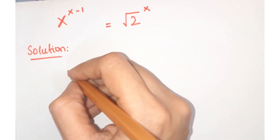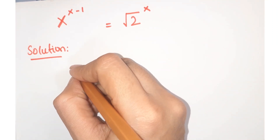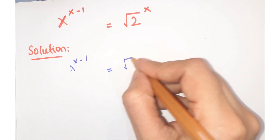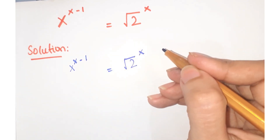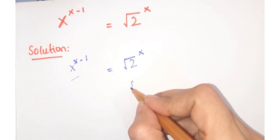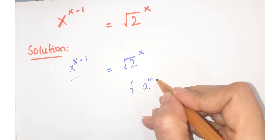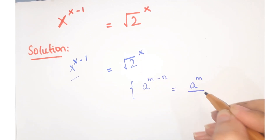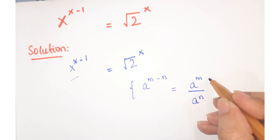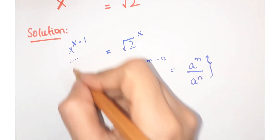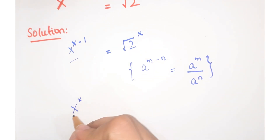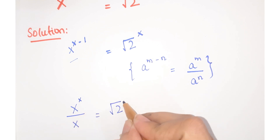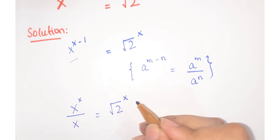Look at this question. The question is x to the power x minus 1 is equal to square root of 2 to the power x. Now for this, as you know that a to the power m minus n can be written as a to the power m upon a to the power n. So we can write this as x to the power x upon x is equal to square root of 2 whole to the power x.